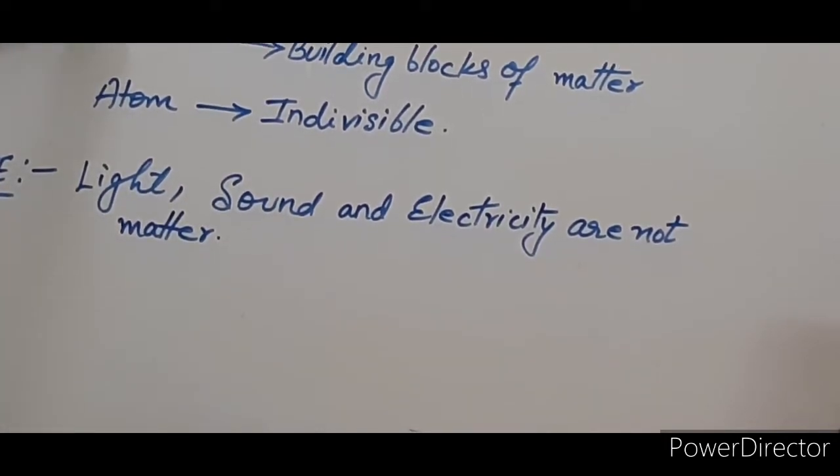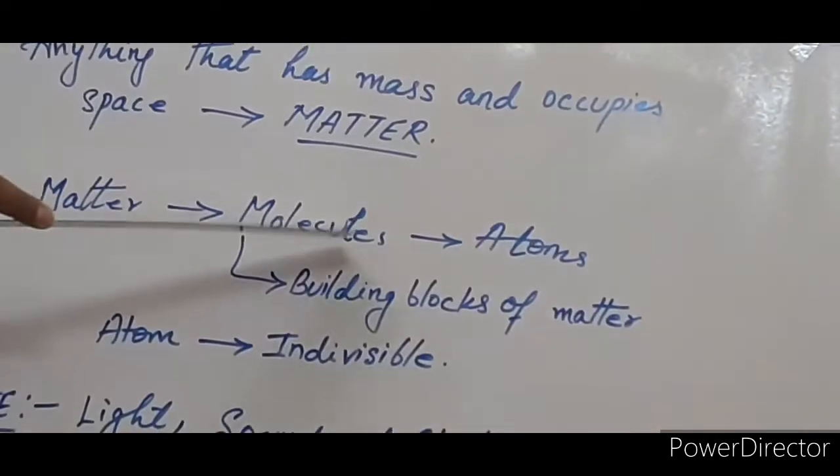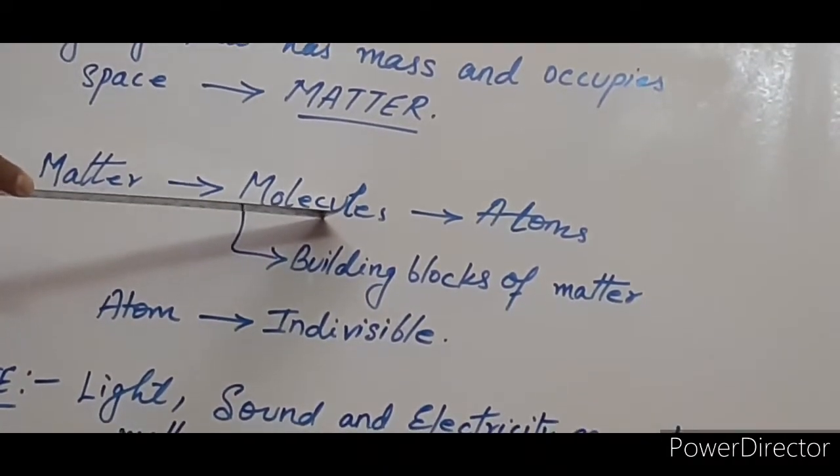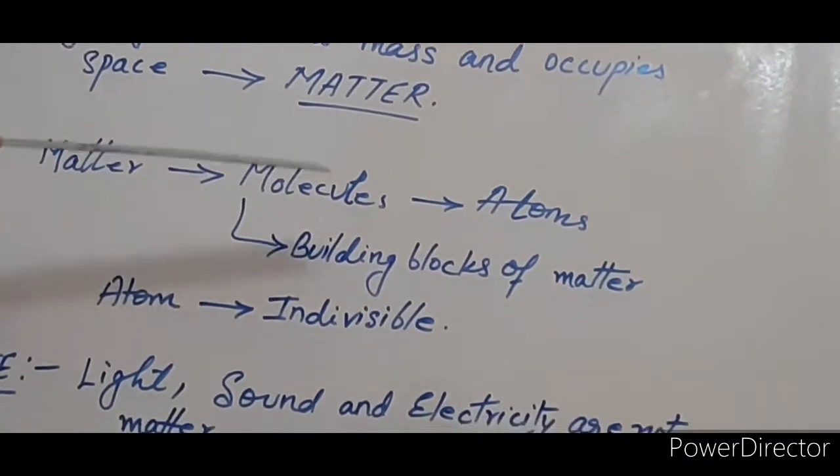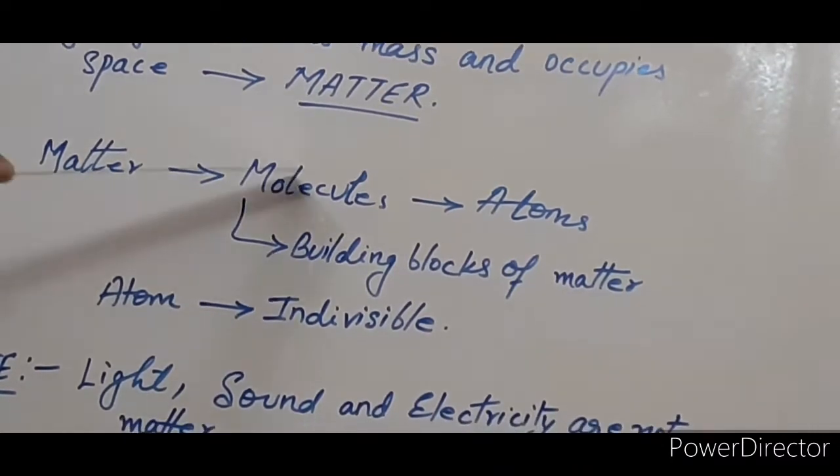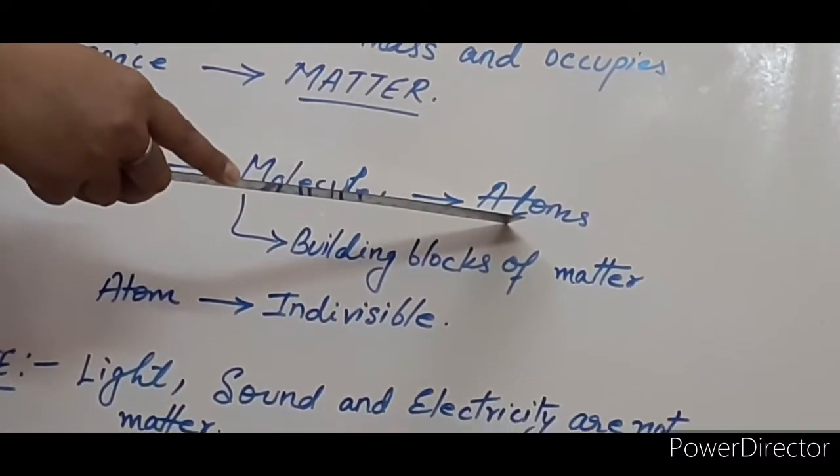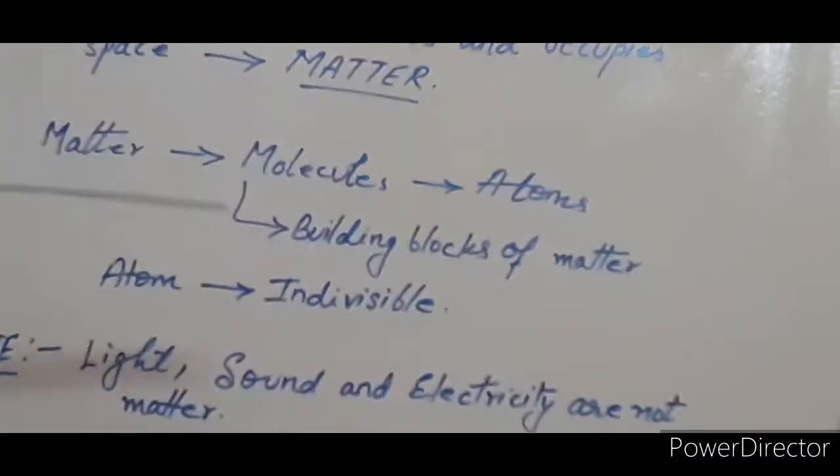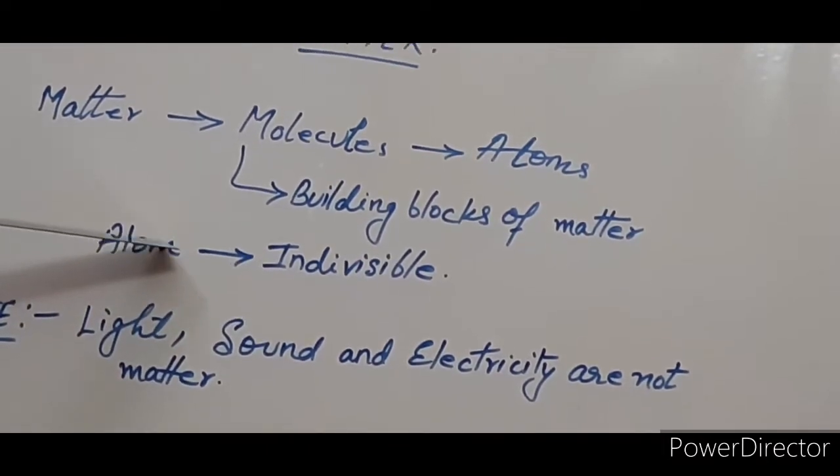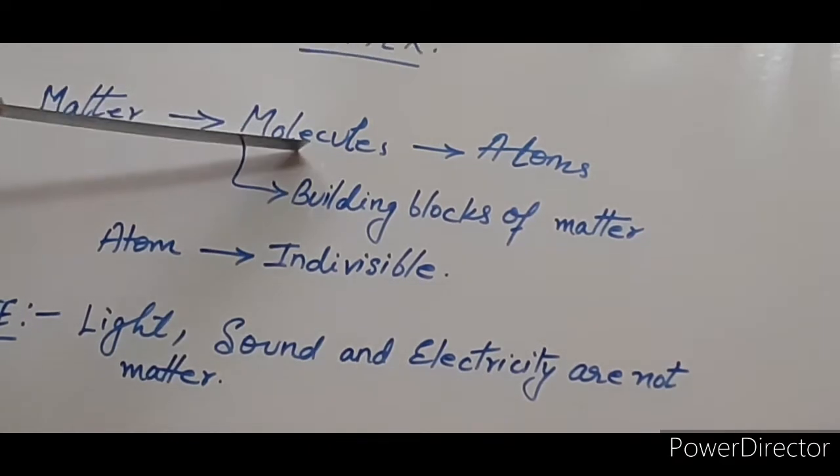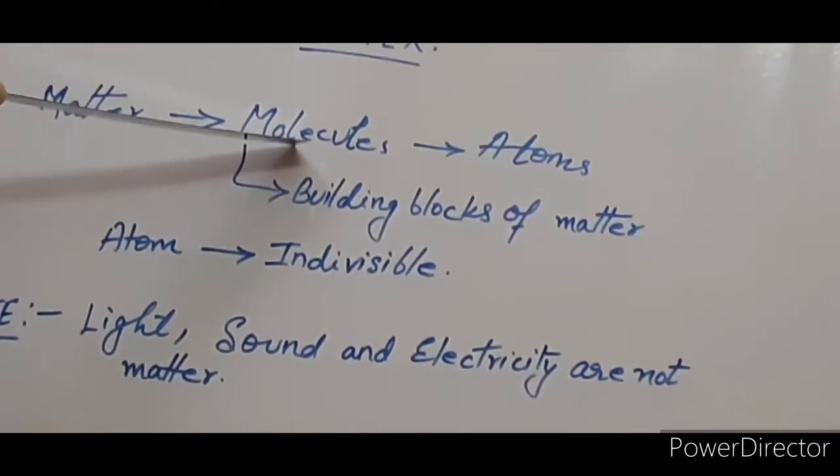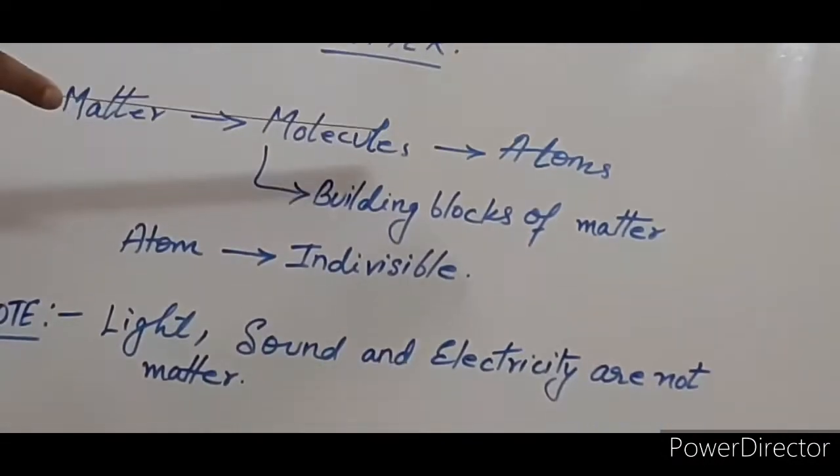Now, all matter is made up of tiny particles called molecules. These molecules are the building blocks of matter. Just like bricks are the building blocks of your house, similarly, molecules are the building blocks of matter. Now, these molecules are made up of atoms. The word atom has come from a Greek word which means indivisible. That means it cannot be further divided into small parts. The molecules are so small that they cannot be seen with our naked eyes. They can be seen only under a powerful microscope.